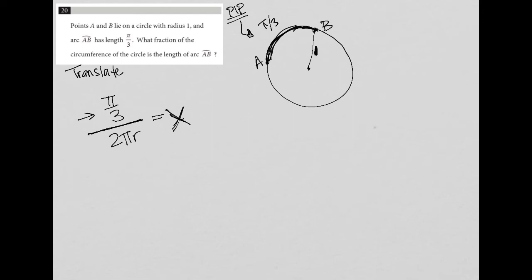So this is a complex fraction. We have two fraction bars. So anytime I see that, I like to just separate them. So I'll say π over 3, and then I'll use this division symbol, divided by, and then my 2πr.